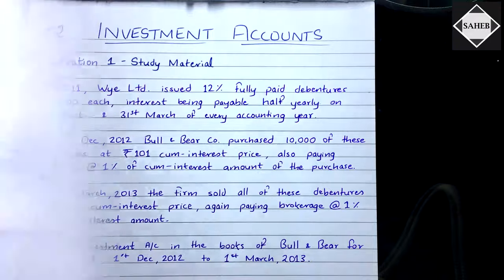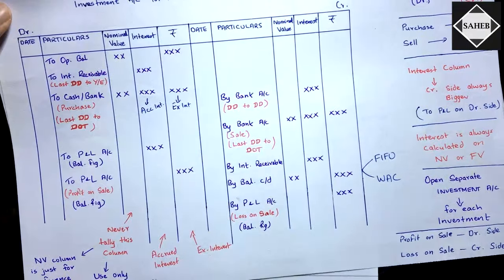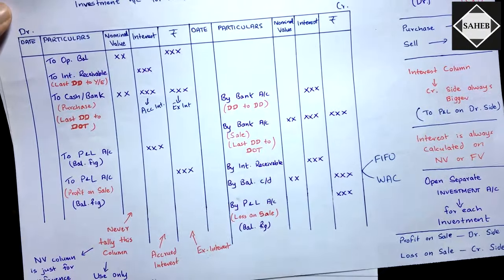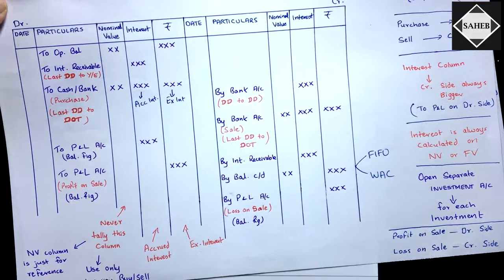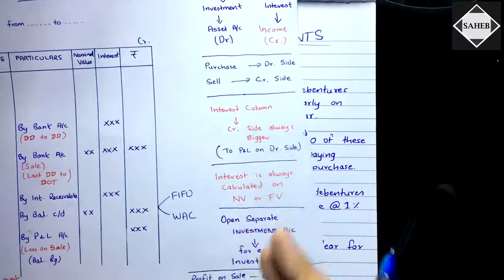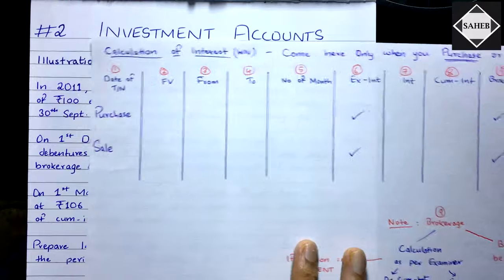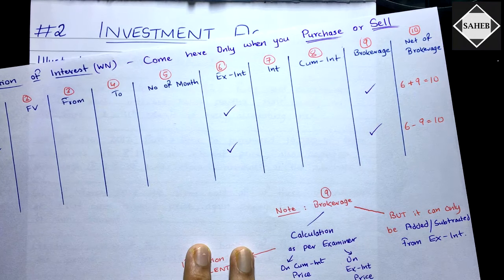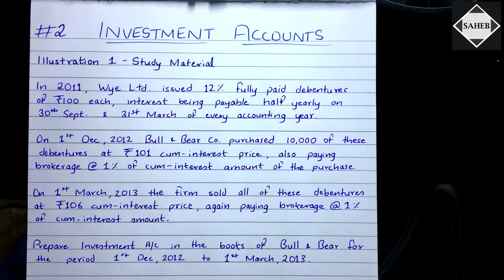Cost of investment includes anything incurred to acquire the investment — brokerage, taxes, fees, duties, GST and so on. When you sell the investment, you subtract all selling expenses. We also saw the format of the investment account, which is very important, so please watch the previous video to understand the format properly.